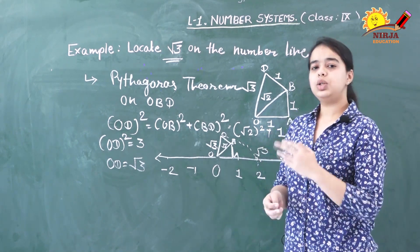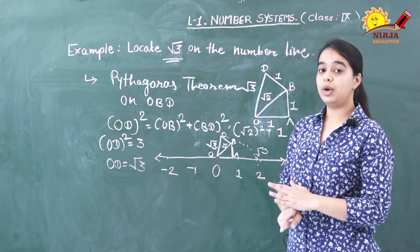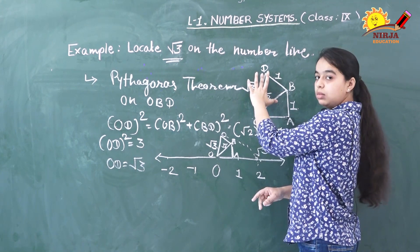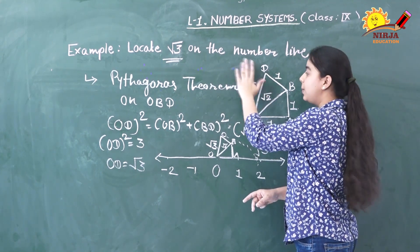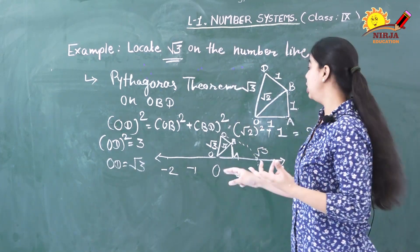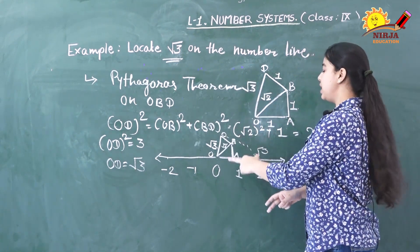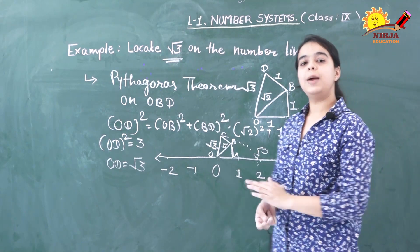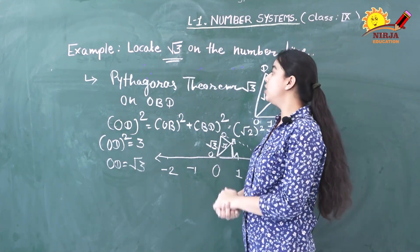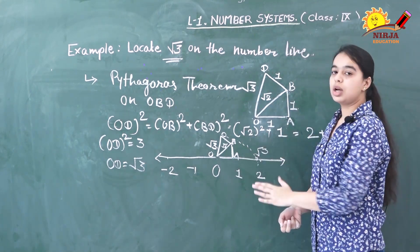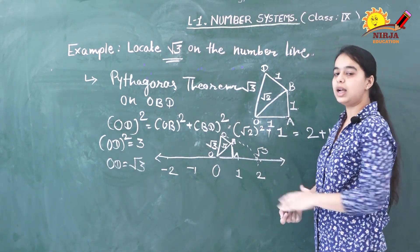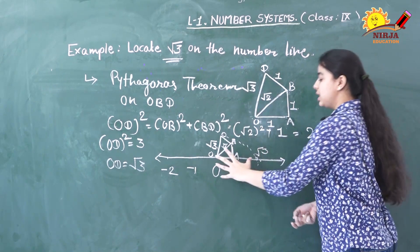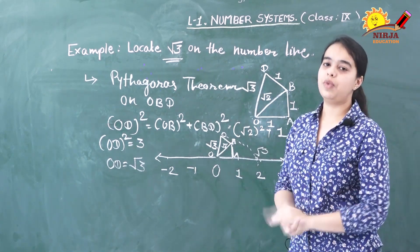Now, what if you want to indicate √4 on the number line? You proceed in the same manner: take a perpendicular line to OD, make a triangle, apply the Pythagorean theorem to that triangle, and you will get the next value as √4. Place that figure on the number line in the same manner. Here is a task for you: locate √5 on the number line. Follow the same examples of how we located √2 and √3, move further, get the value of one side as √5, place that figure on the number line, draw the arc, and you will have √5 on your number line.